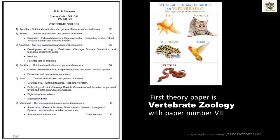This is your first theory paper, Vertebrate Zoology with paper number 7. It deals with all the animals which possess a backbone or a vertebral column.